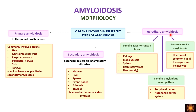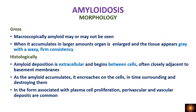In hereditary amyloidosis there are three types. In familial Mediterranean fever the most common organs involved are the kidneys, blood vessels, spleen, respiratory tract, and liver. In familial amyloidotic neuropathies the peripheral nerves and autonomic nervous system are involved. In systemic senile amyloidosis the most common organ involved is the heart.